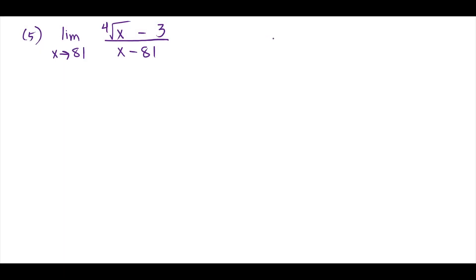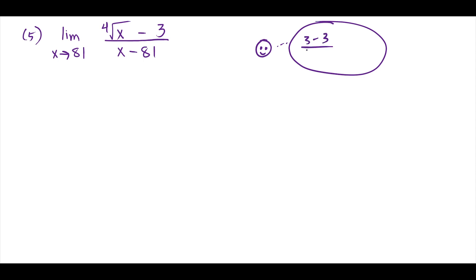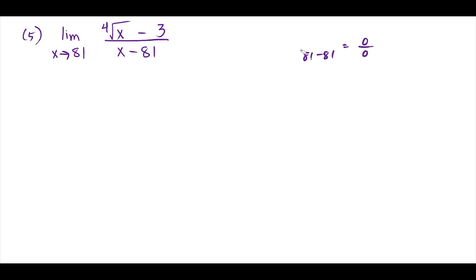For question 5, we start by plugging in x equals 81. The fourth root of 81 is 3, and 81 minus 81 is 0, so we get 0 over 0 again. This means we cannot evaluate the limit by direct substitution, so we switch to algebra.